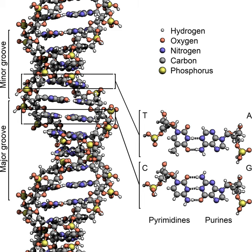Each type of base on one strand forms a bond with just one type of base on the other strand. This is called complementary base pairing. Here, purines form hydrogen bonds to pyrimidines, with A bonding only to T and C bonding only to G. This arrangement of two nucleotides joined together across the double helix is called a base pair. In a double helix, the two strands are also held together by forces generated by the hydrophobic effect and pi-stacking, but these forces are not affected by the sequence of the DNA.